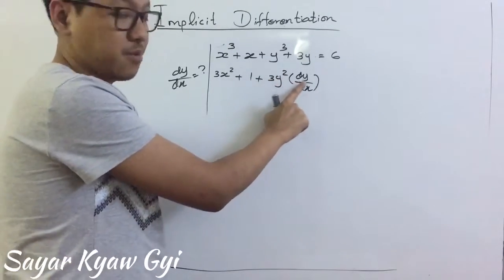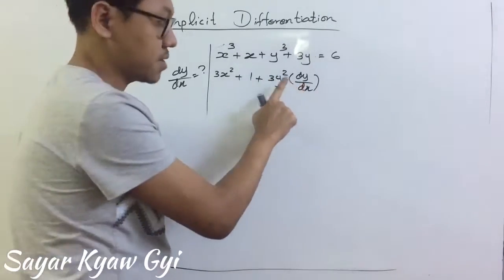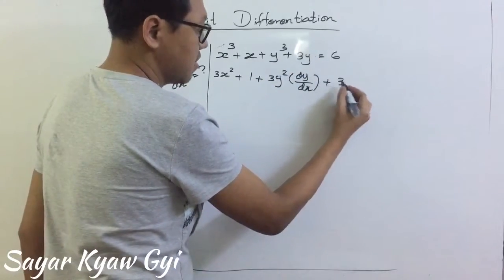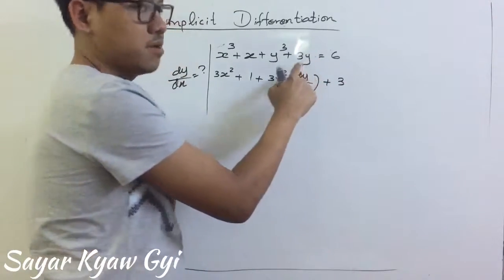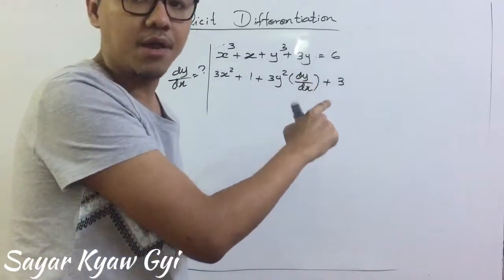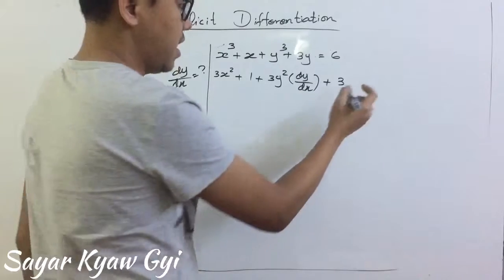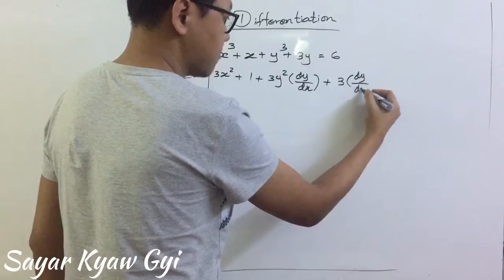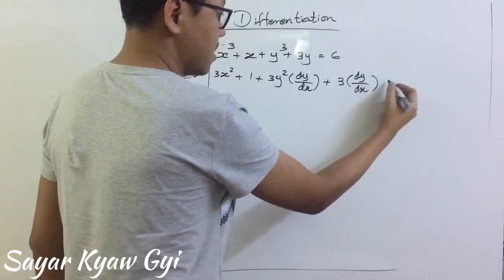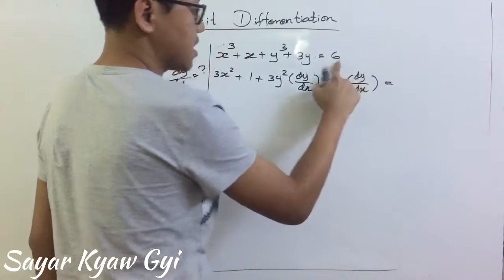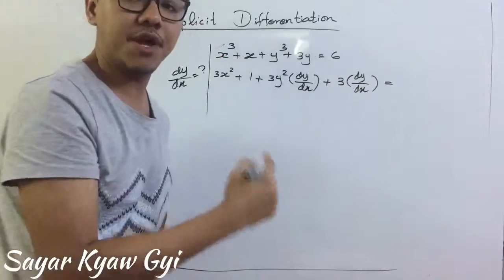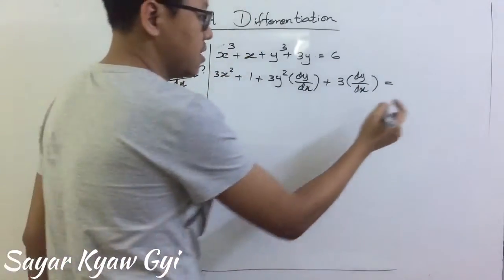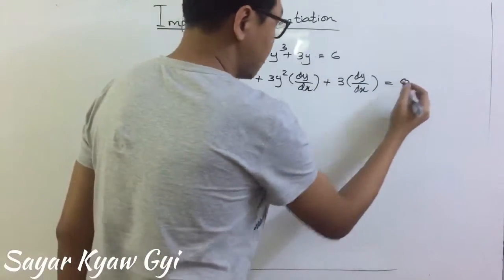Remember, don't forget — whenever you differentiate y, you have to write dy by dx. And then, when you differentiate 3y, we get 3 and we have to write dy by dx. Equal to 6. When we differentiate the constant, we get 0.